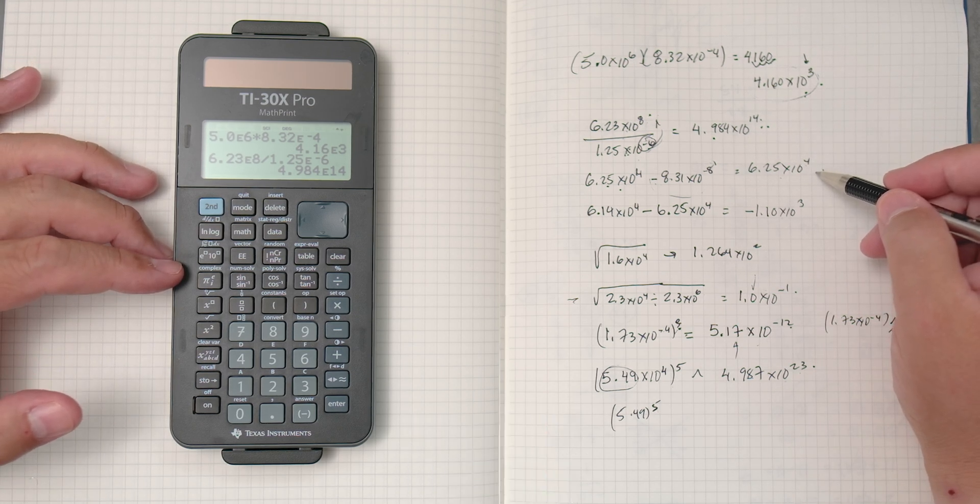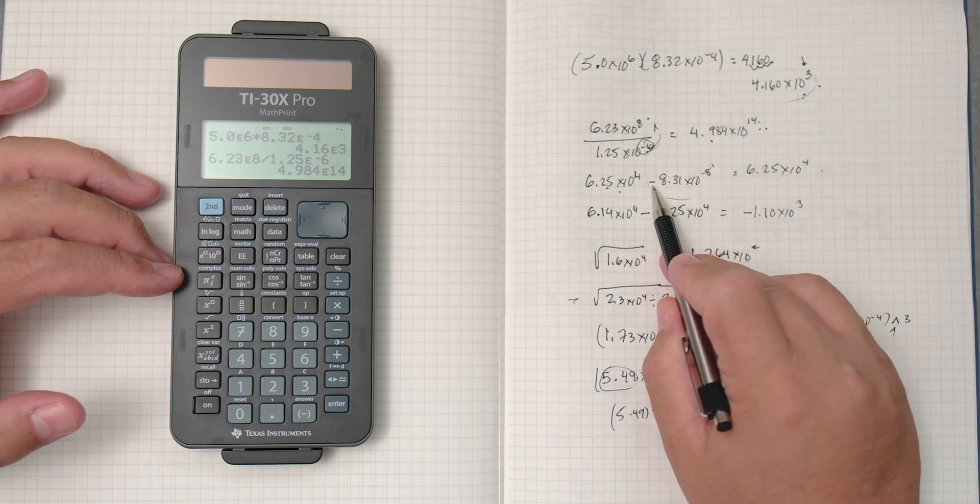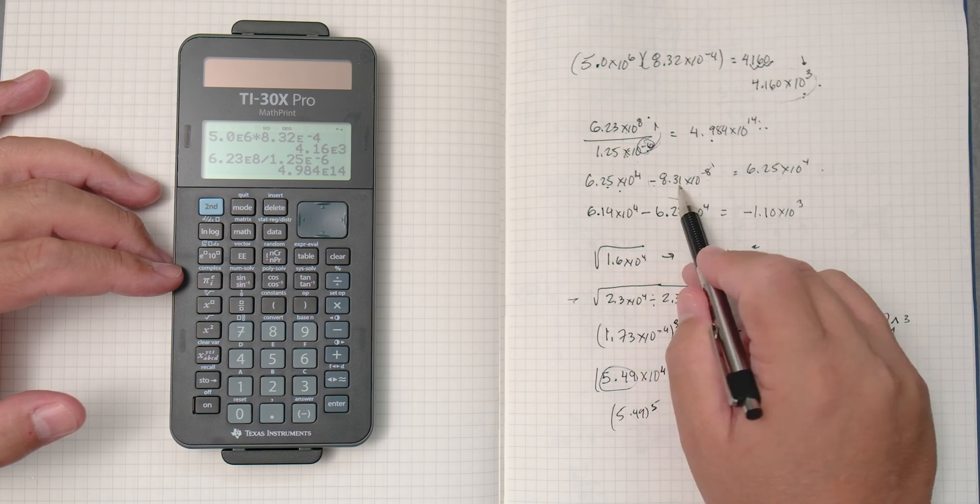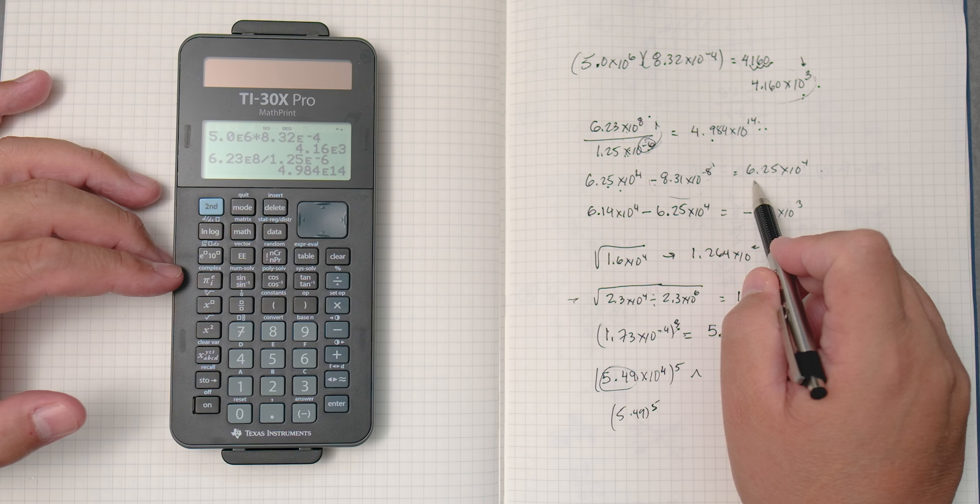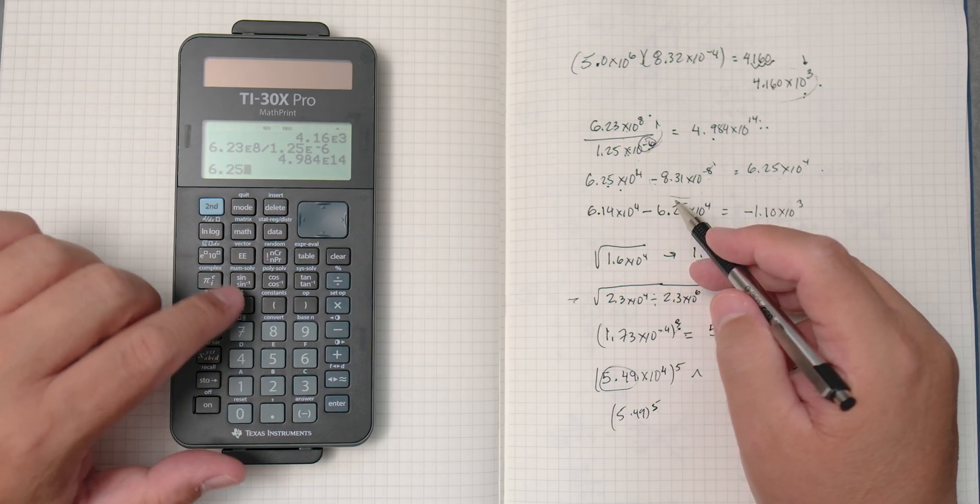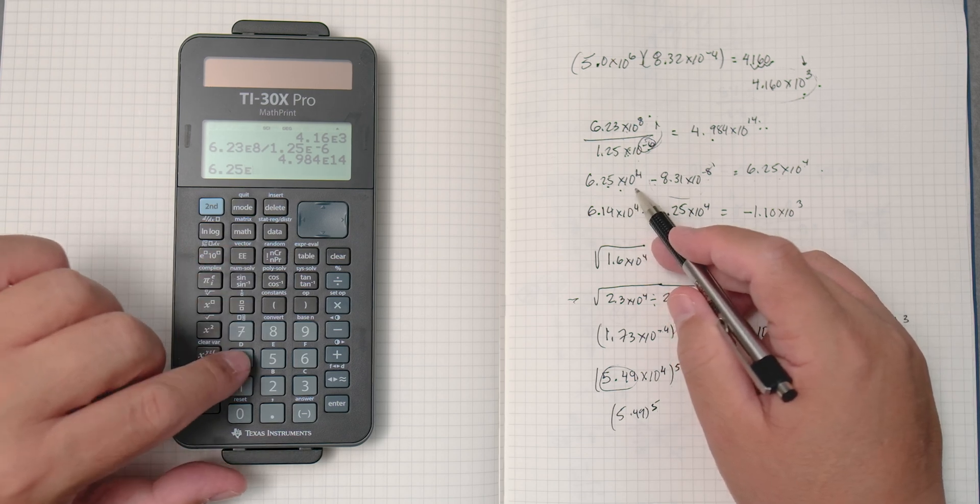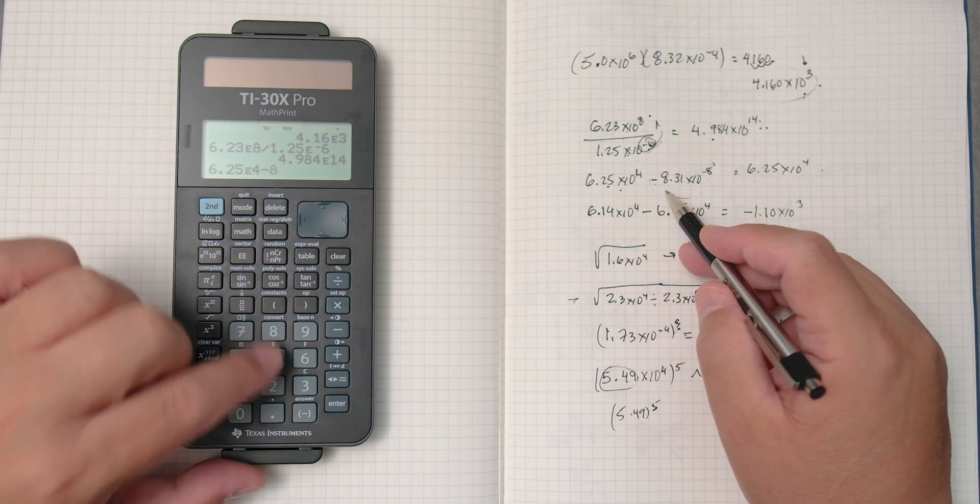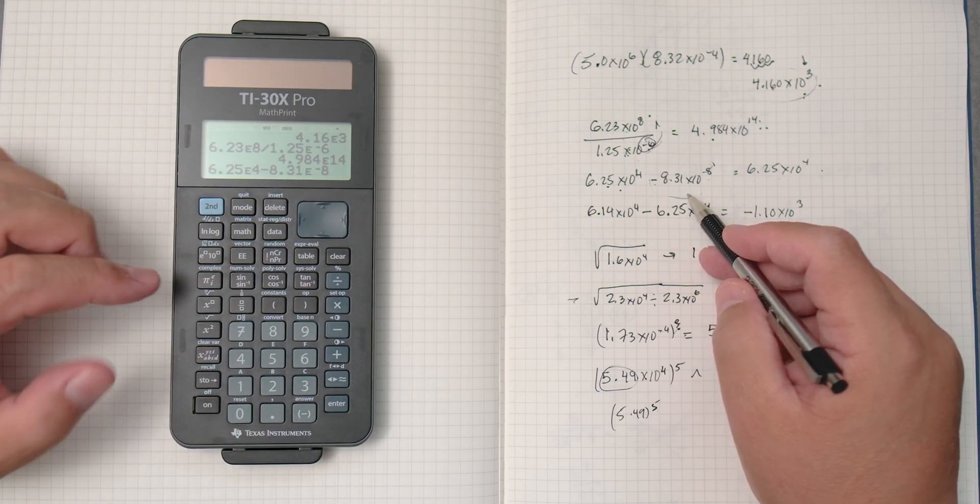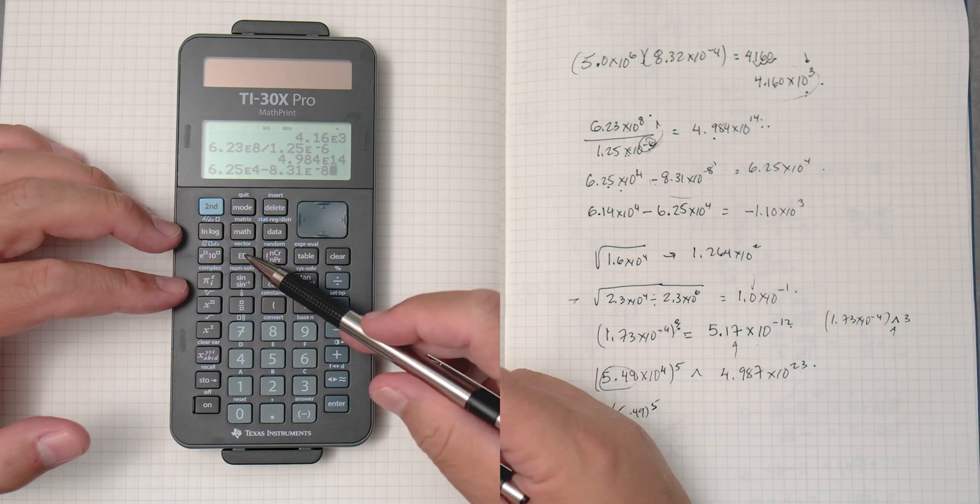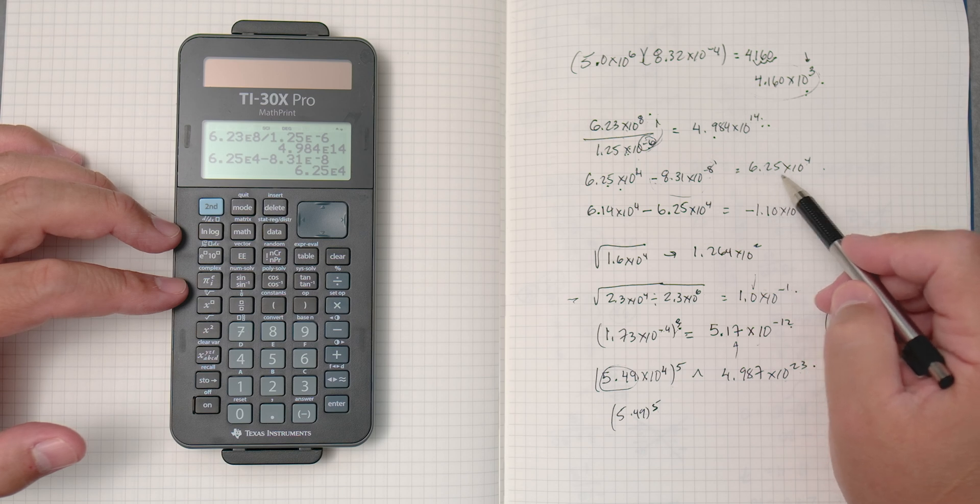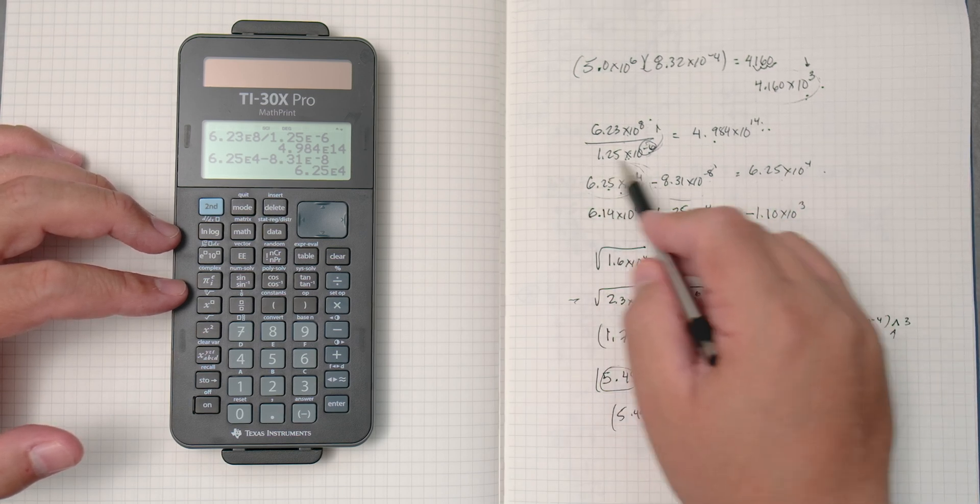Okay, how about this one? This one is, we're going to subtract. Now, this is a very big number, this is a very small number. When you subtract these numbers, it's not going to make a big difference. It's just going to give you the big number. But we're going to do it anyway. 6.25 times 10 to the fourth. Take away, 8.31 times 10 to the minus 8. So, double E gives you times 10 and then you put the value. Enter. 6.25 times 10 to the fourth. It's the same big number.